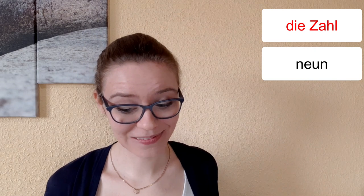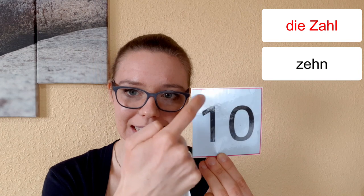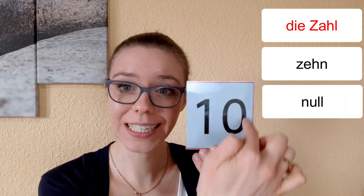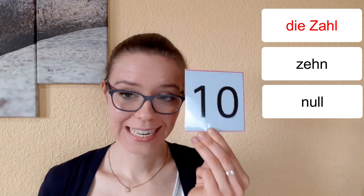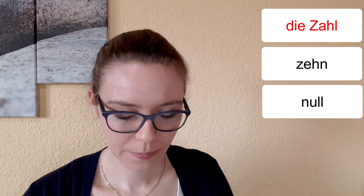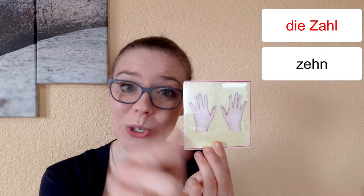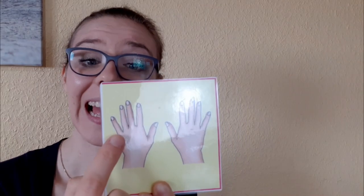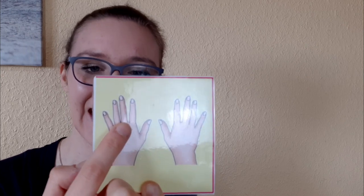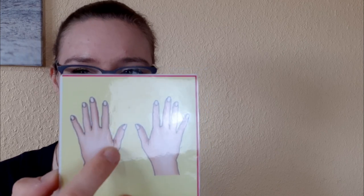Die letzte Zahl. Das ist die Zehn. Eine Eins und eine Null. Die Null. Nichts. Null. Das ist eine Zehn. Zehn. Und das hier sind zehn Finger. Fünf Finger. Fünf Finger. Zehn Finger. Kannst du die Finger zählen? Eins, zwei, drei, vier, fünf, sechs, sieben, acht, neun, zehn. Sehr gut.